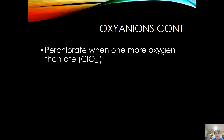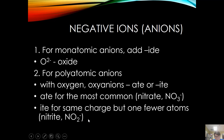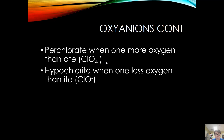When you have one more oxygen than the -ate form, you use the prefix per-. So ClO4 minus one is perchlorate, ClO3 is chlorate, ClO2 is chlorite, and one less than -ite gets the prefix hypo- — so ClO minus one is hypochlorite. The pattern is: per-ate, ate, ite, hypo-ite.